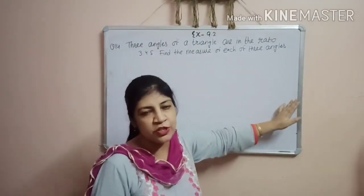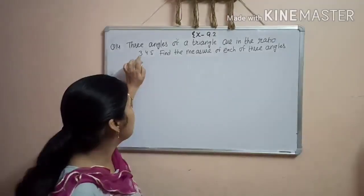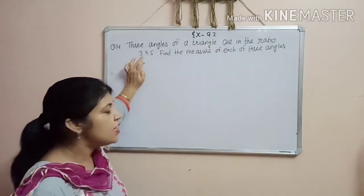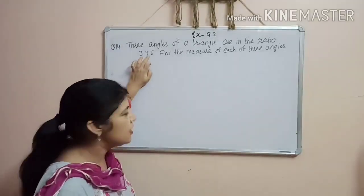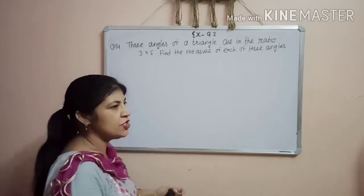Find the measure of each of 3 angles. And you know when ratio is given, what does it mean? It means first angle is 3x, second angle is 4x and third angle is 5x. Very simple question.